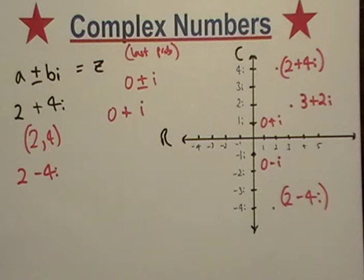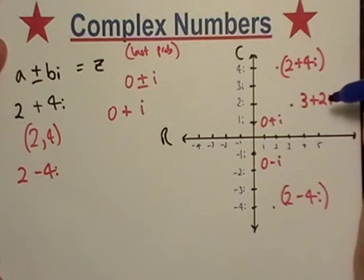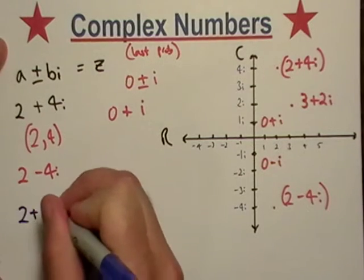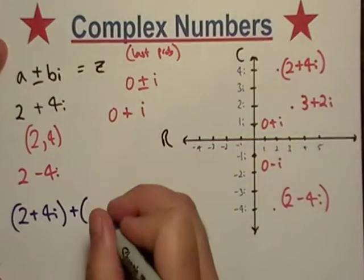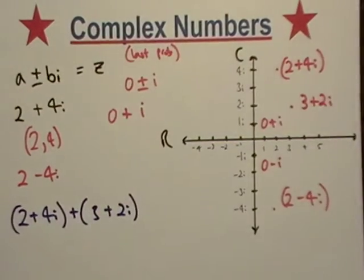So let's see if maybe we can, let me get another color and let's just do some addition. So let's say I took, let's take 2 plus 4i and let's add it to 3 plus 2i.